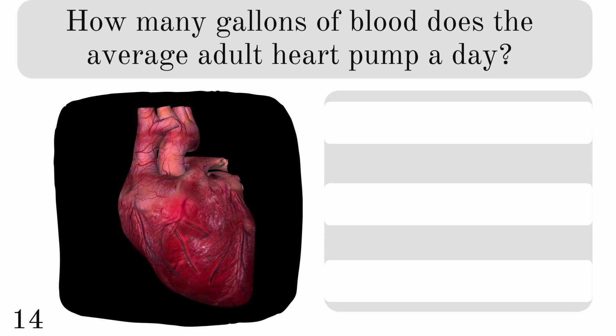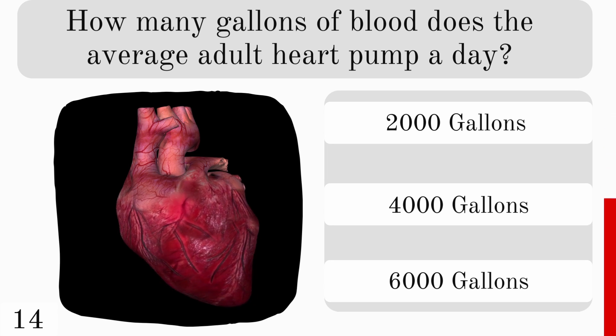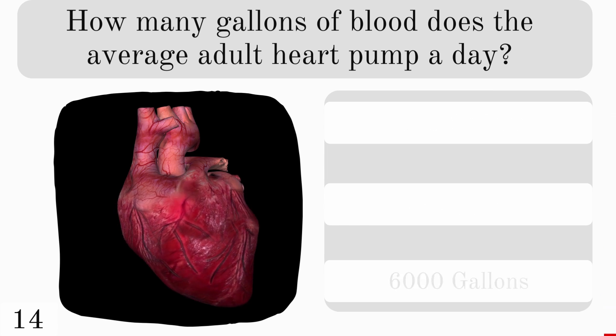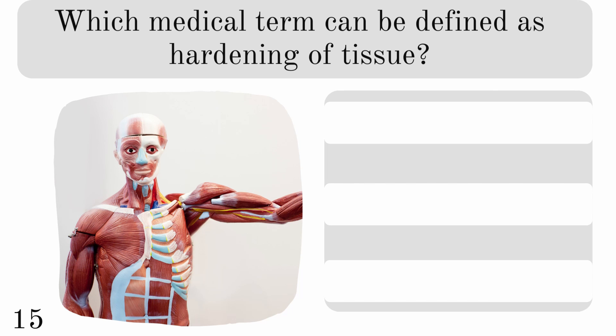How many gallons of blood does the average adult heart pump in a day? Two thousand, four thousand, or six thousand? And the answer is two thousand. Which medical term can be defined as hardening of tissue? Stasis, sclerosis, or osteo? And the correct answer is sclerosis.